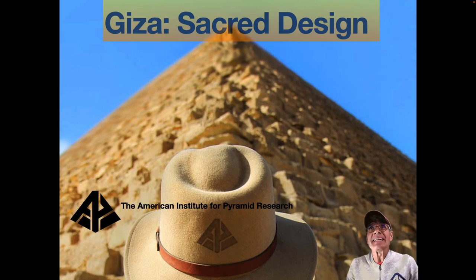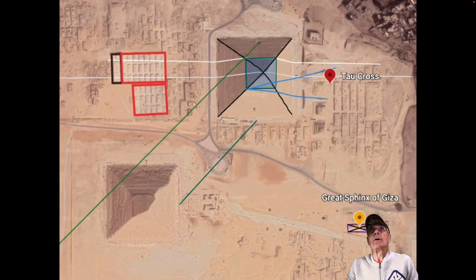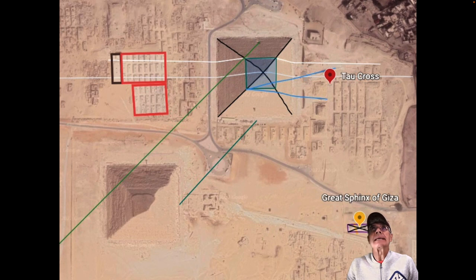More on the sacred design at Giza. This time we're going to look at the Western Tomb Field. Here's a Google Earth shot that I've been working with. You can see here, over here, this is the Western Tomb Field, just west of the Great Pyramid.